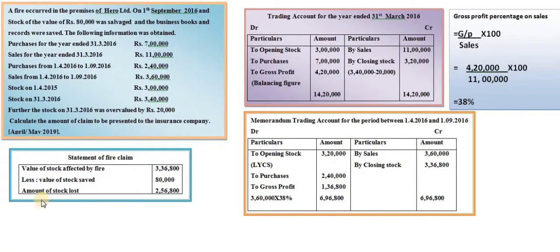Hello everyone, today we are going to see another problem on fire insurance claim. Let us go through the problem. A fire occurred in the premises of Hero Limited on 1st September 2016, and the stock of the value 80,000 was salvaged — that means saved — and the business books and records were saved. The following information was obtained.